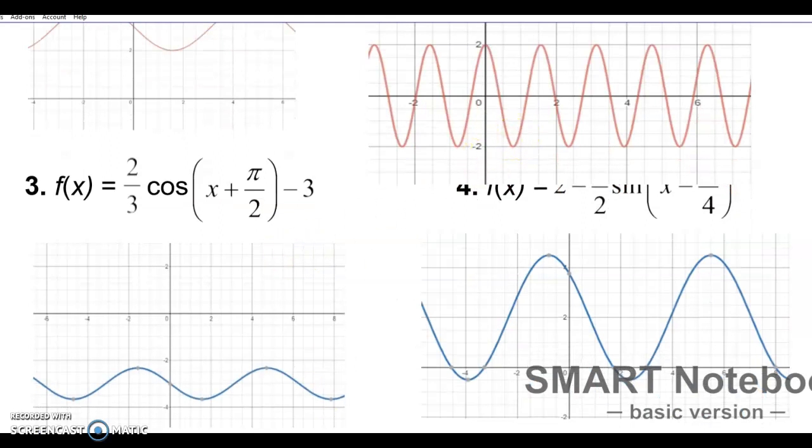Number 3. We have 2 thirds cosine. So instead of going up 1 unit, it goes up 2 thirds units. The x plus π halves. This is a cosine function. So cosine should have started here on the x axis, but it's been shifted π halves to the left, because this is plus π halves. So it's being shifted to the left π halves. And it's being shifted down 3. So instead of the midline at 0, it is down here at negative 3.